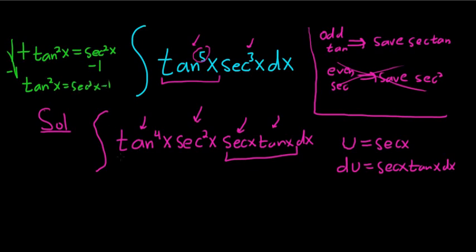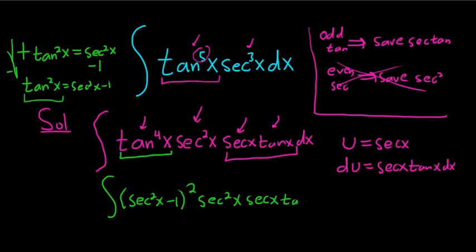So we can replace the tangent to the fourth with tangent squared squared. So this is going to be parentheses secant squared x minus 1 squared secant squared x. And then here we have the secant x and the tangent x, dx. Now we can make our substitution.